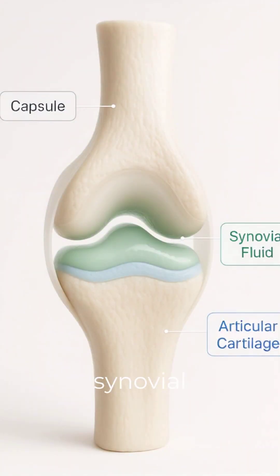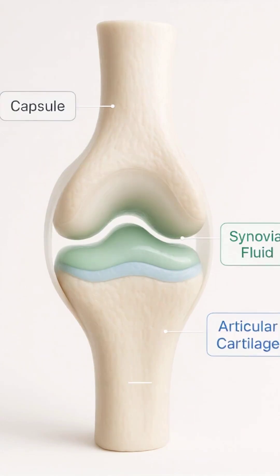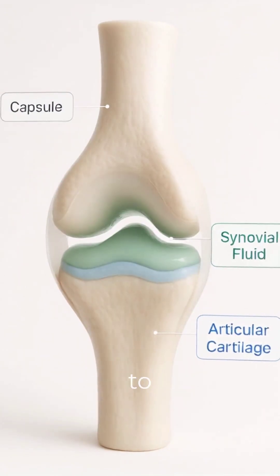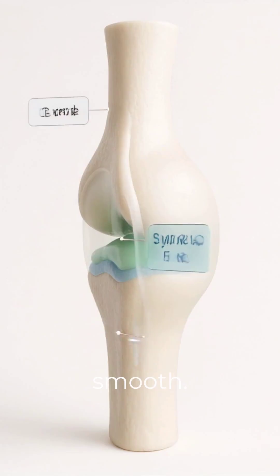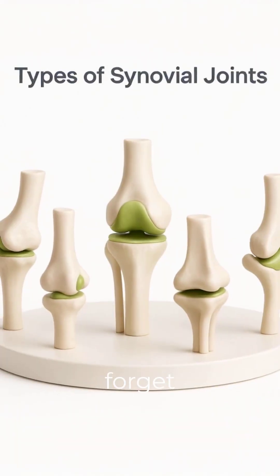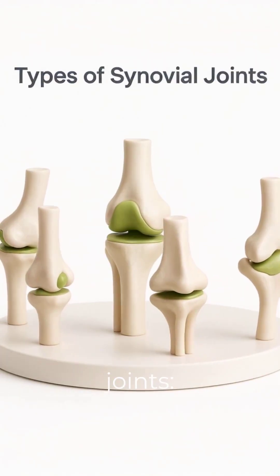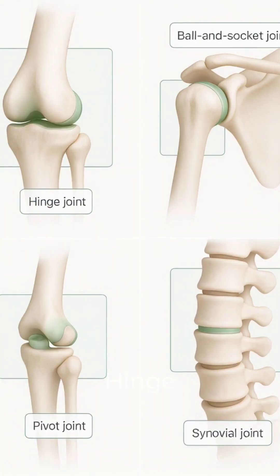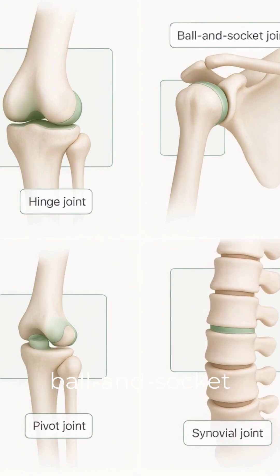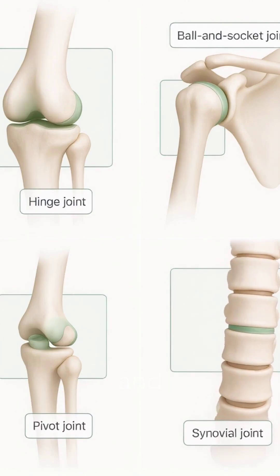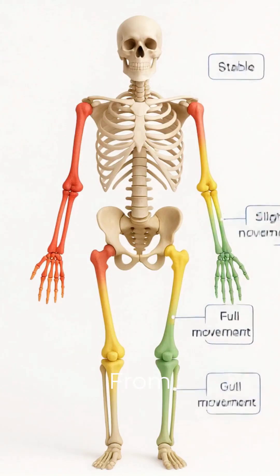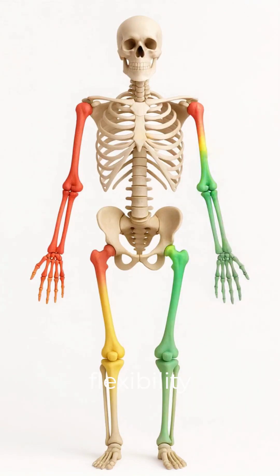A synovial joint has a joint capsule, synovial fluid, and articular cartilage — all designed to reduce friction and keep things smooth. And don't forget the types of synovial joints: hinge, like the elbow; ball and socket, like the shoulder; pivot, like the neck; and more.